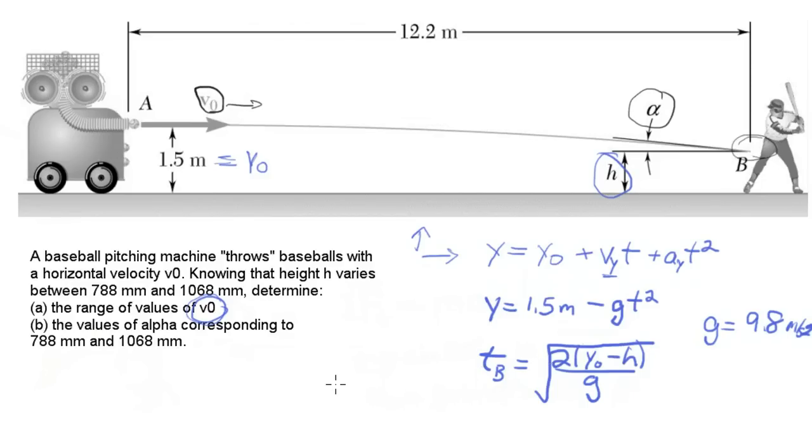And so there's our expression for t. And we can get, let me write it down here. We'll say if h is 788 millimeters, which is 0.788 meters, then t, you can go plug that in and t should be 0.381 seconds.